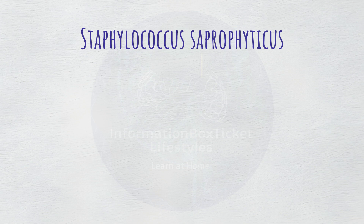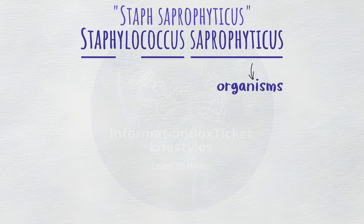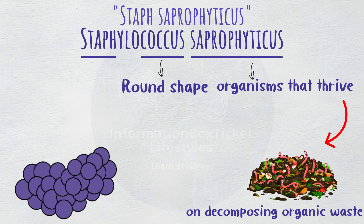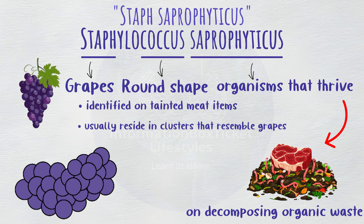When referring to Staphylococcus saprophyticus, also known as Staph saprophyticus, the terms saprophyticus and coccus denote organisms that thrive on decomposing organic waste. Thus, spherical bacteria called Staphylococcus saprophyticus are frequently identified on tainted meat items. These bacteria usually reside in clusters that resemble grapes.